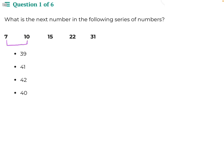The difference between our first pair, 7 and 10, is 3. The difference between 15 and 10 is 5. The difference between 15 and 22 is 7, and the difference between 22 and 31 is 9.